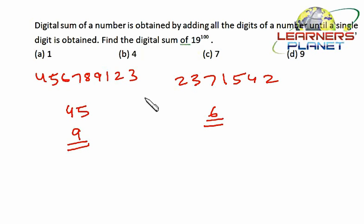Let's compare both the cases. This number is actually a multiple of 9 and this number is not a multiple of 9. If the number is a multiple of 9, the digital sum will always be 9 only. And in this case, the digital sum is always a remainder which I am getting after dividing this number by 9.